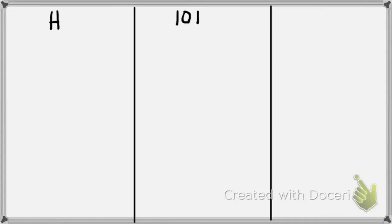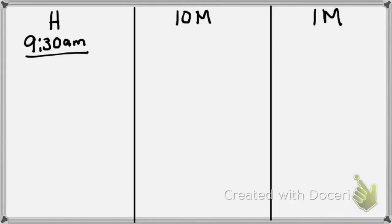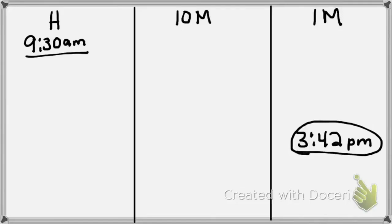I'll divide my page into three columns: the first column H for hours, the middle column 10M for 10 minutes, and the right column 1M for one minute. I don't know the hours or minutes yet — that's what I'm looking for. But I do know Daniel started at 9:30 a.m., so I'll write that in the first column. I also know the end time is 3:42 p.m., so I'll write that at the end and circle it. I cannot pass 3:42 p.m.